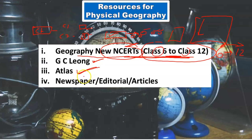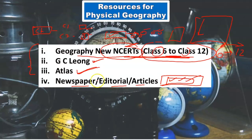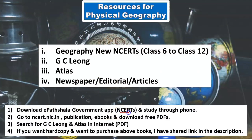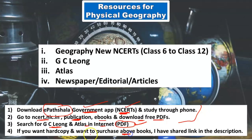You also need to keep an atlas with you. Newspaper editorials and articles from The Hindu will play a very important role. Without reading current affairs, you cannot pass this examination. Whatever we study here is the static part; you also have to update yourself with recent happenings. To read NCERTs free of cost on your mobile phone, you can download the e-Pathshala app — it is a government app. If you want to read on your laptop, go to ncert.nic.in, hover over the publications section, click on e-book, and download free PDFs. You can search for GC Leong and Atlas online as well. If you want to purchase the books, links are shared in the description.